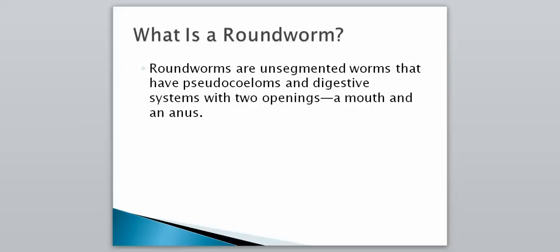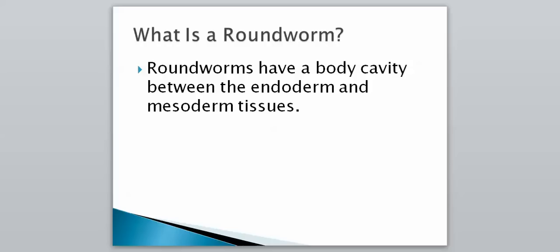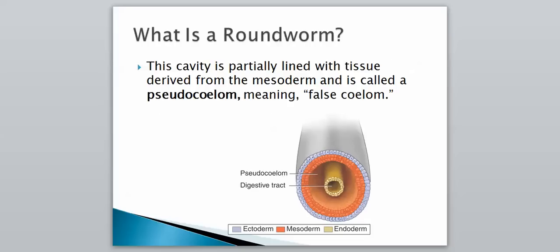This is our first group of animals that actually has two digestive openings, because the flatworms and the cnidarians both had just one opening for food and waste. Now we actually have two openings: a mouth and an anus. Roundworms also have a body cavity between the endoderm and mesoderm tissue. This cavity is partially lined with tissue derived from the mesoderm, and it's called a pseudocoelom — meaning false coelom. So it's not quite a coelom yet, but it's almost going to function the way the coelom does in the next group of worms.